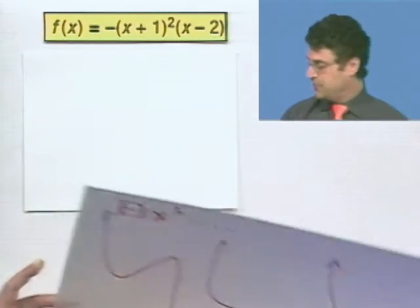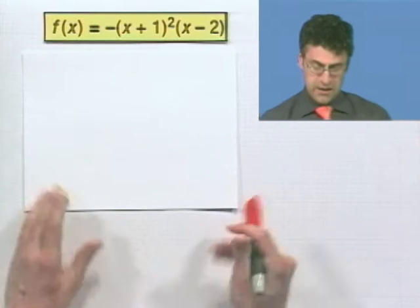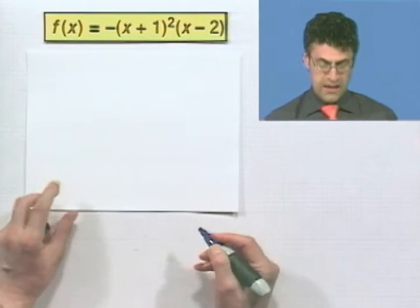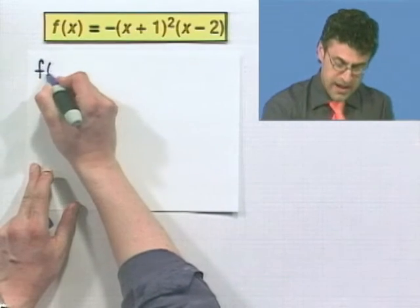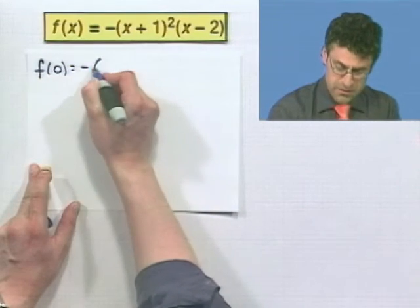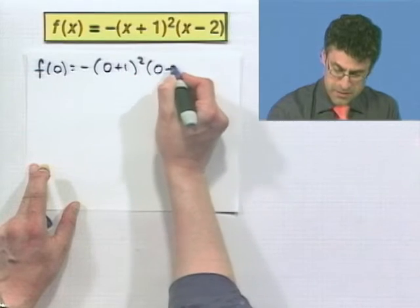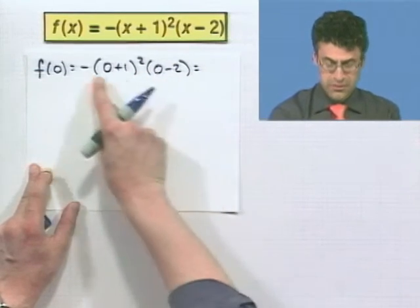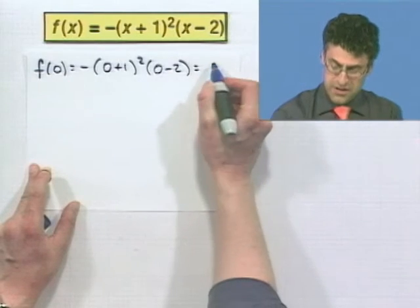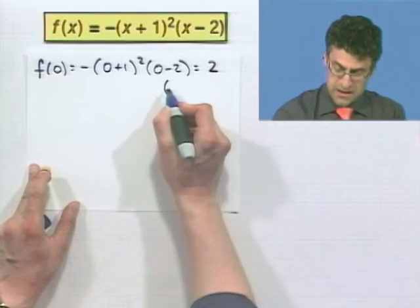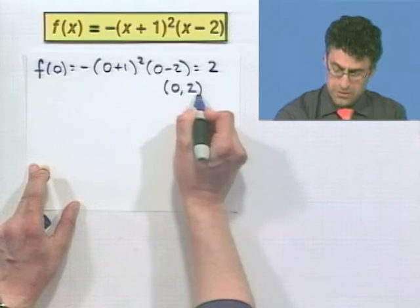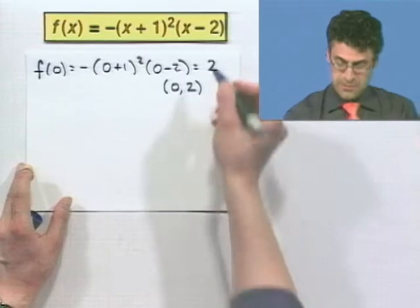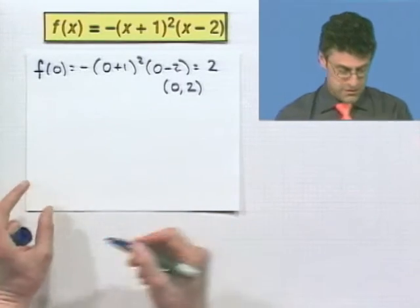Let's see if we can find some nice points. First, let's find the y-intercept. The y-intercept is when x equals 0, so you plug in 0. I see 0 plus 1 squared times 0 minus 2 — that's 1 times negative 2, and the negative sign out front gives positive 2. So (0, 2) is the point where we cross the y-axis. The y-intercept is at 2.